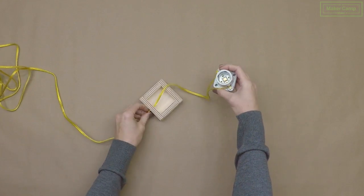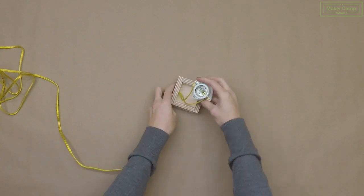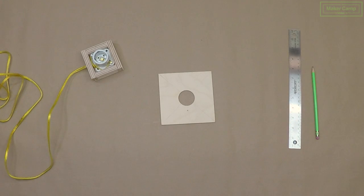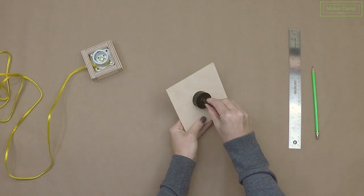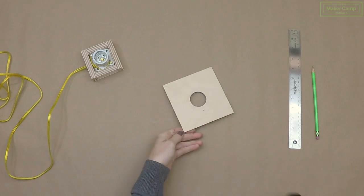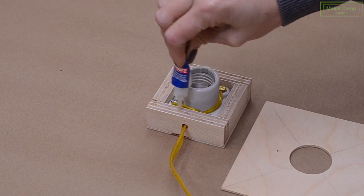Alright, now feed your cable back through the hole and put your lamp socket inside the square. This square is 5 inches by 5 inches. Use your 1.5 inch hole saw to drill a hole right in the middle of this square. Glue it down.